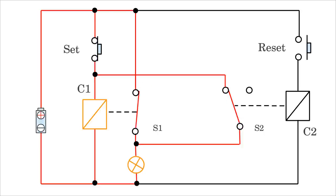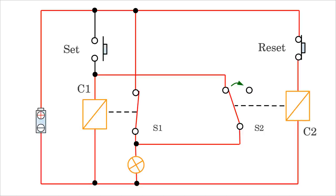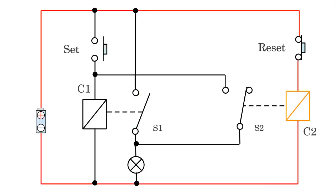As soon as switch 1 is closed by the relay, an additional conductive path running through the load is established. When releasing the Z button, coil 1 stays energized by the conductive path running through its own switch — the state is stable with the load connected to the supply voltage. Pushing the reset button energizes the coil of relay 2, by which switch 2 is opened, breaking the conductive path running through the coil of relay 1, by which S1 falls back to its rest position, breaking the path through the load.